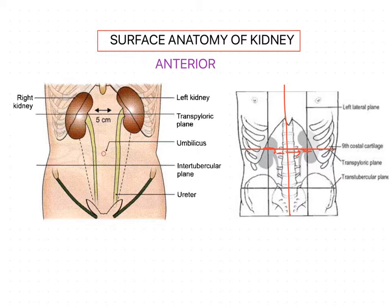From the hilum, the outlines of the kidney can be drawn, keeping their usual size in mind. You use the hilum as the starting point to draw the kidneys on the anterior aspect, keeping their usual size in mind. The surface anatomy of the kidney is very important in surgical practice, to be aware of the anterior and posterior relationships of the kidney.